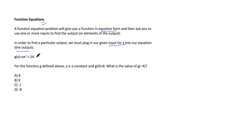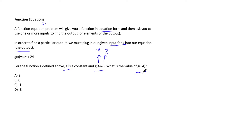In this example we have a quadratic function. For the function g defined above, a is a constant and g(4) = 8 — where 4 is our input x and 8 is our output y. What is the value of g(−4)? These questions are straightforward; you shouldn't lose marks here because they only require simple calculation.